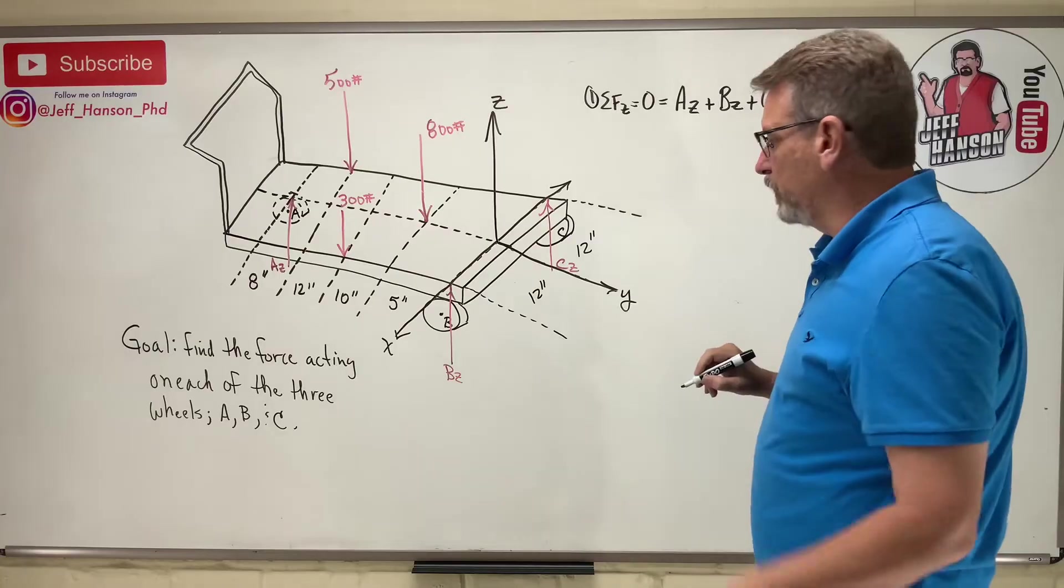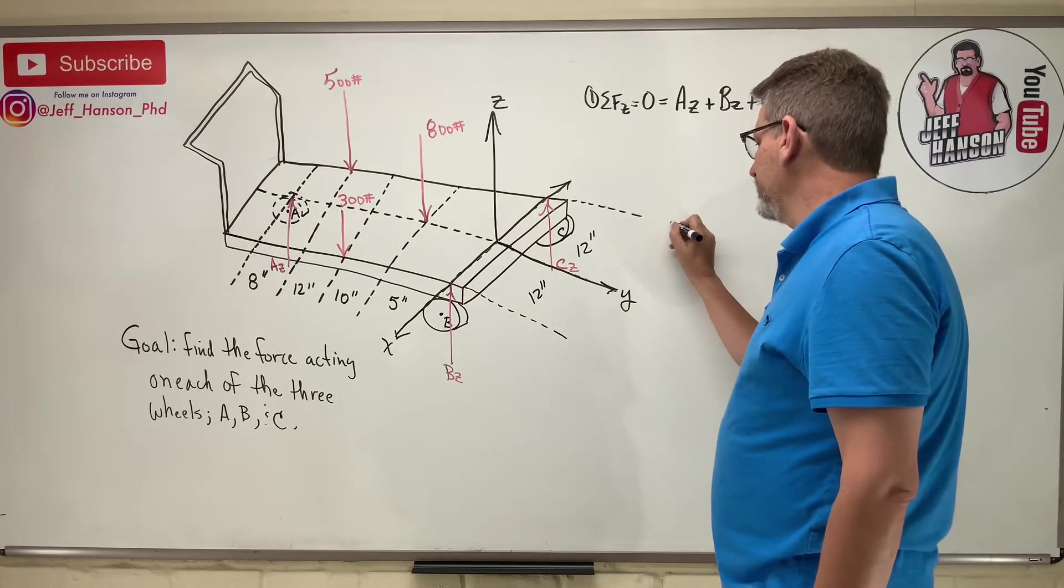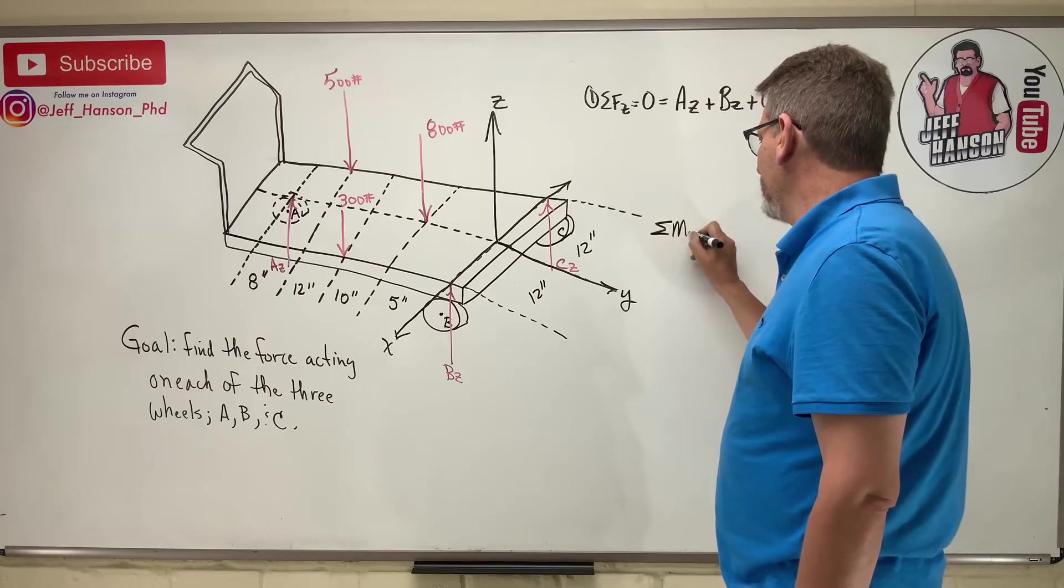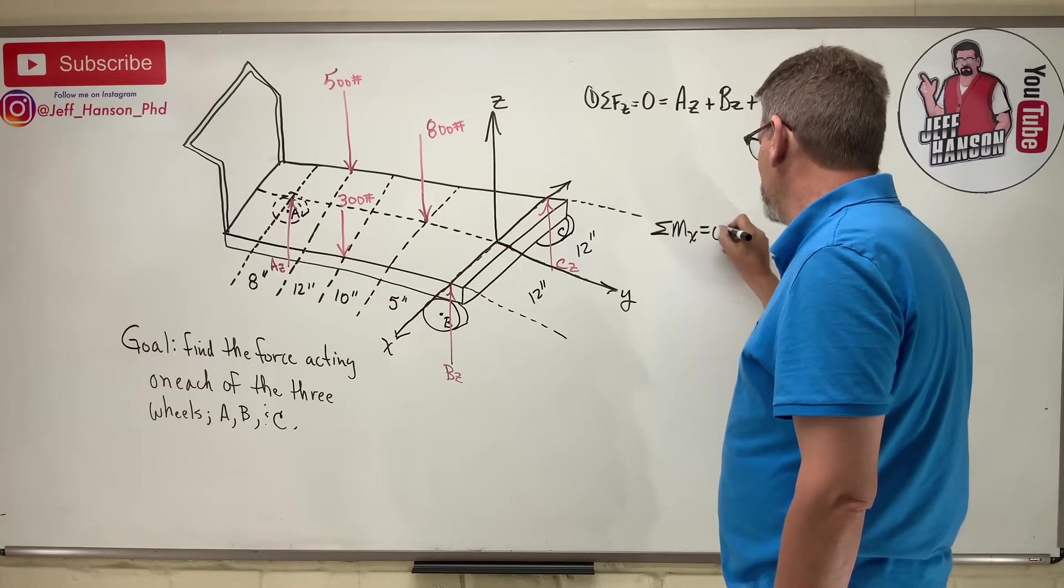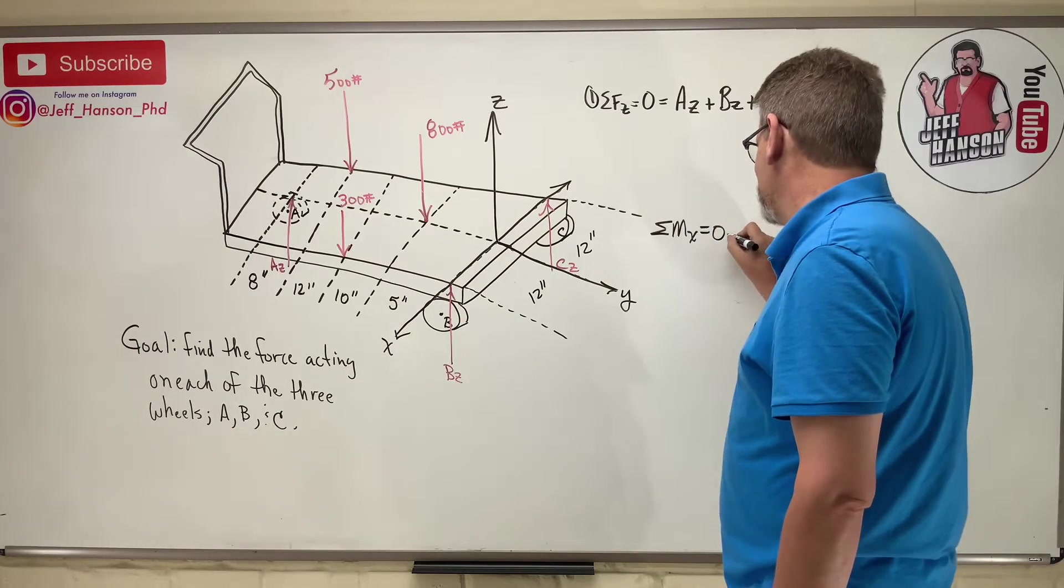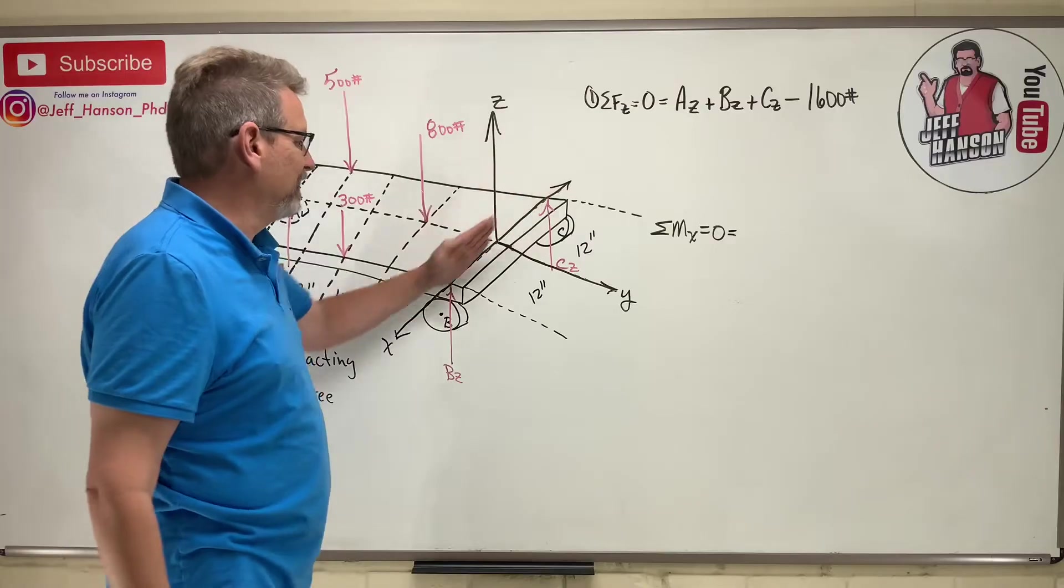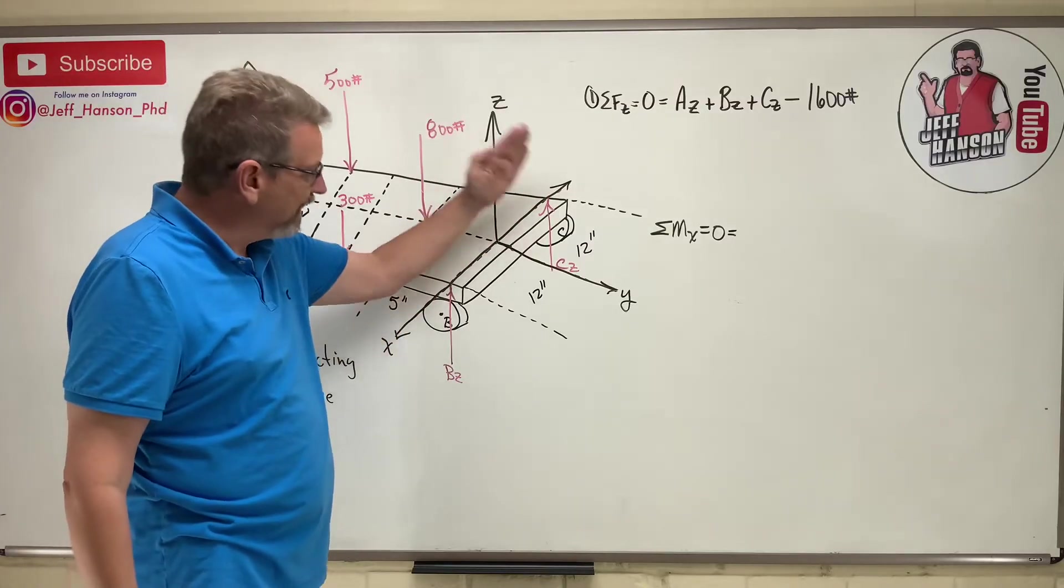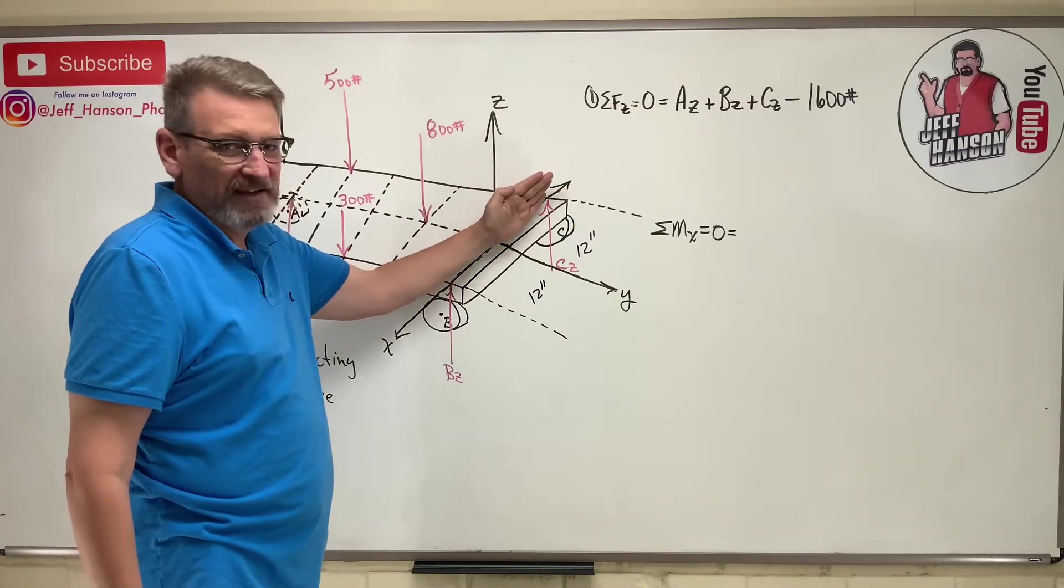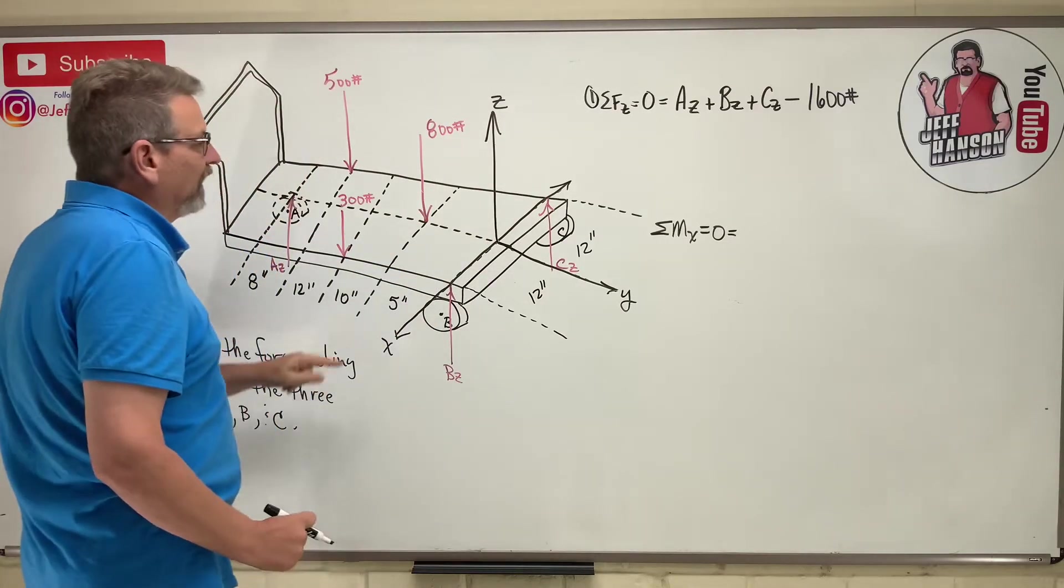The next equation, number two, I think let's try this: sum of the moments about the x-axis. Things that make me spin around the x. So here's the x-axis, right? So immediately Cz and Bz, bam, to the house, they're knocked out, right?